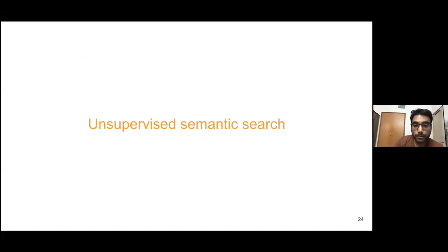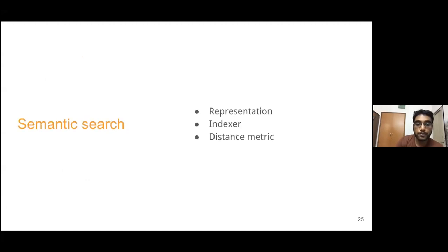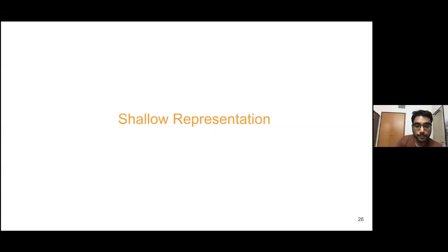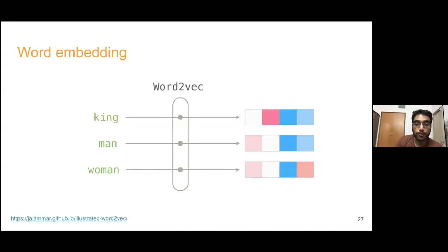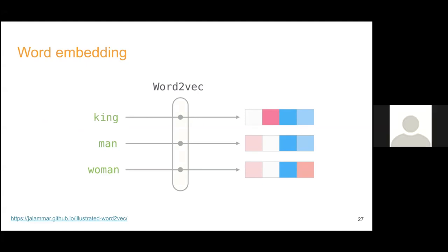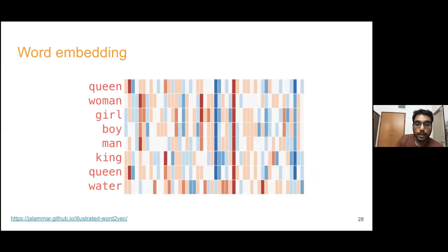Now coming to semantic search in an unsupervised way. We need to represent text, index it, and have a distance metric. To represent it we can use shallow, deep, or contextual models. With word2vec - or better, GloVe or FastText which are available in different vector sizes - we can represent words as numbers. These vectors have meaning as per our understanding, but also contain things we don't fully understand.